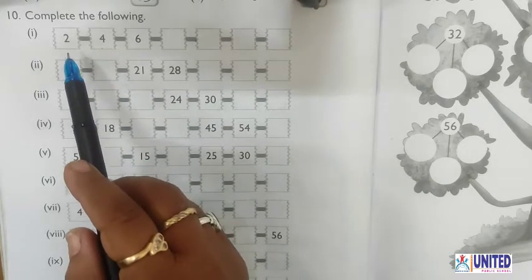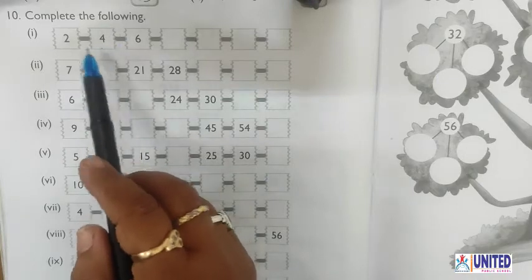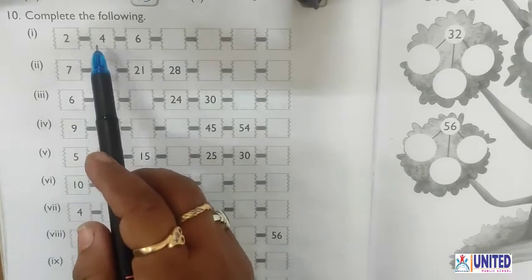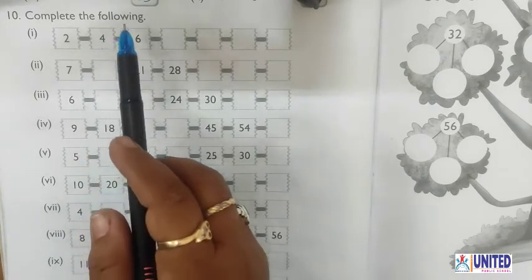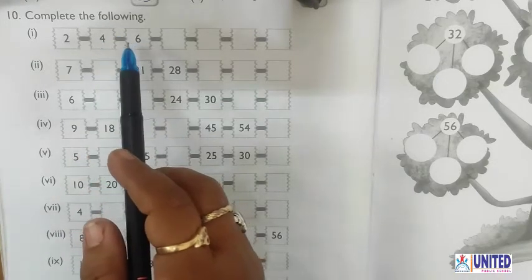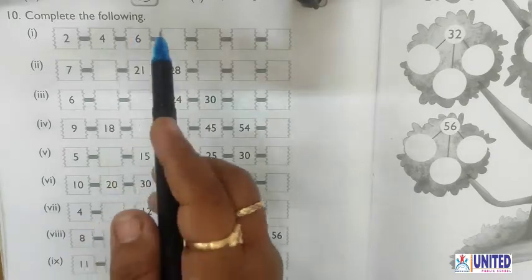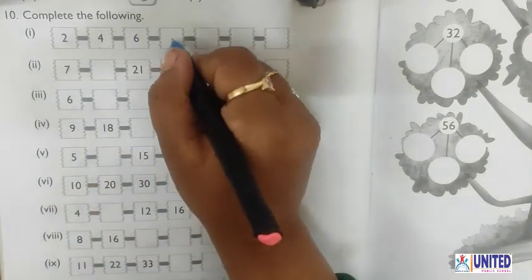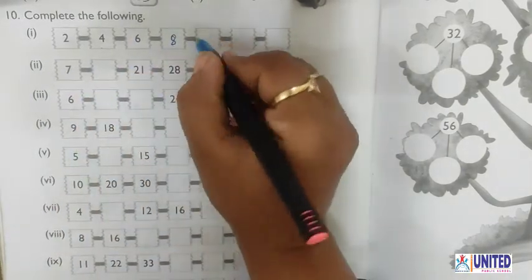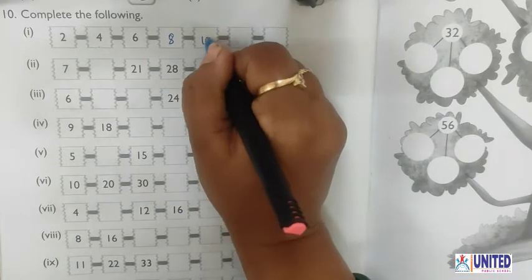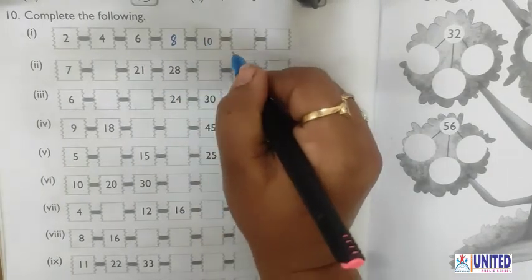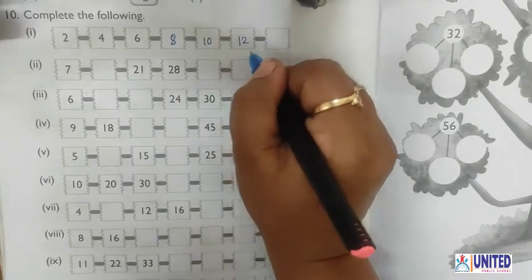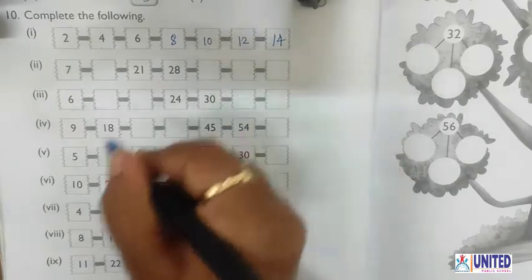So in this way you can also see the table of 2: 2×1=2, 2×2=4, 2×3=6, 2×4=8, 2×5=10, 2×6=12, 2×7=14.